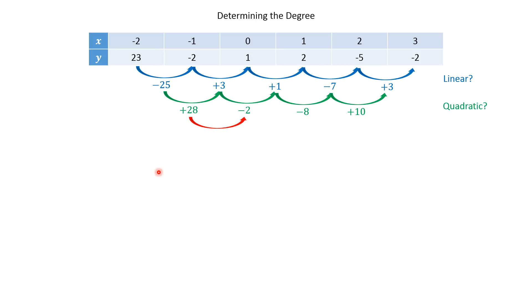But third differences. From 28 to negative 2, we're subtracting 30. Negative 2 to negative 8, subtract 6. Negative 8 to 10, we're going to add 18. So that's asking, is it cubic? Well, these numbers are not the same. So no, it is not cubic. Let's try the fourth differences. From negative 30 to negative 6, we add 24. From negative 6 to 18, we add 24. And all of a sudden, it comes together. And so that would be the fourth. That would be x to the fourth. That would be a quartic degree polynomial.